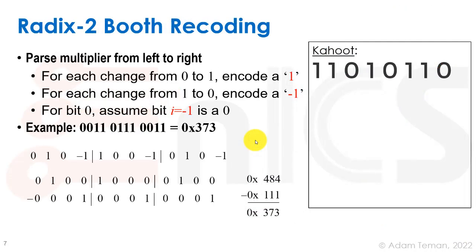What is Radix 2 Booth recoding? Booth noticed that in serial shift-and-add, adding zero requires no adder propagation delay — you can just skip it. So we want as many zeros as possible in the multiplier. He developed an encoding: parse the multiplier from right to left; for each transition from 0 to 1, encode +1; for each transition from 1 to 0, encode −1; for unchanged bits, encode 0. For bit zero, assume i−1 is zero.